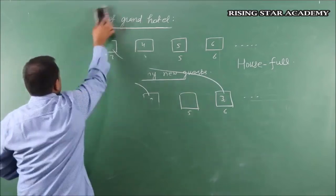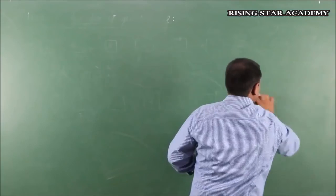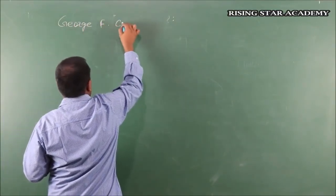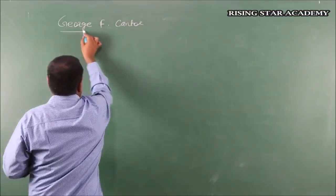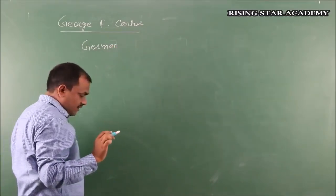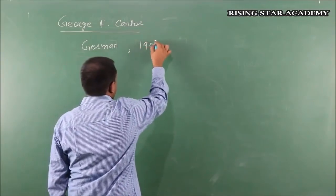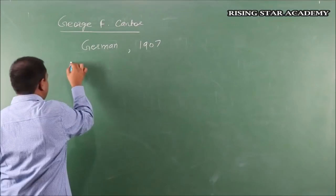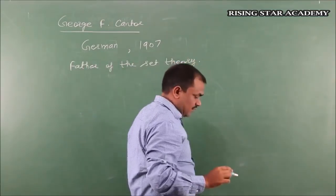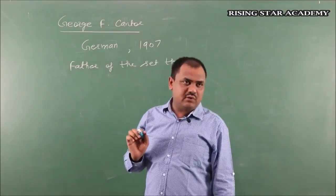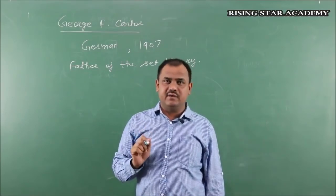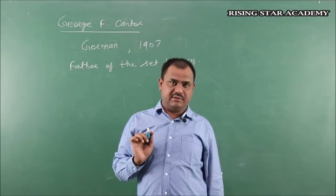After Hilbert, there was a mathematician George F. Cantor — a German mathematician. He gave this theory of countability around 1907. He is also known as the father of set theory. Cantor took his idea from Hilbert's paradox, which I discussed with you, and from there developed a grand and comprehensive concept of countability.